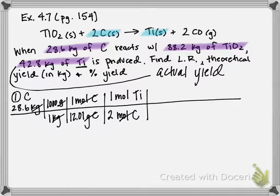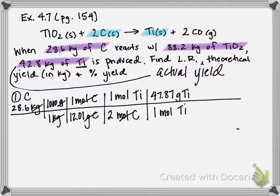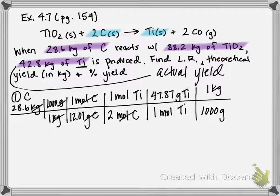Now in moles of titanium, we multiply by titanium's molar mass — 47.87 grams per mole — and then convert from grams back to kilograms so we can compare mass amounts at the end. Doing that calculation gives roughly 57 kilograms of titanium produced from carbon.